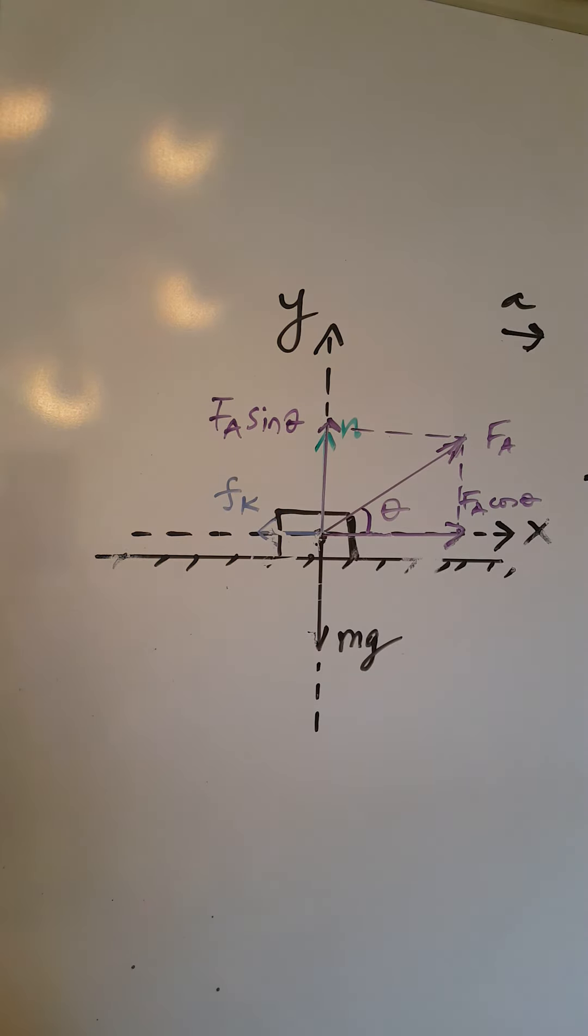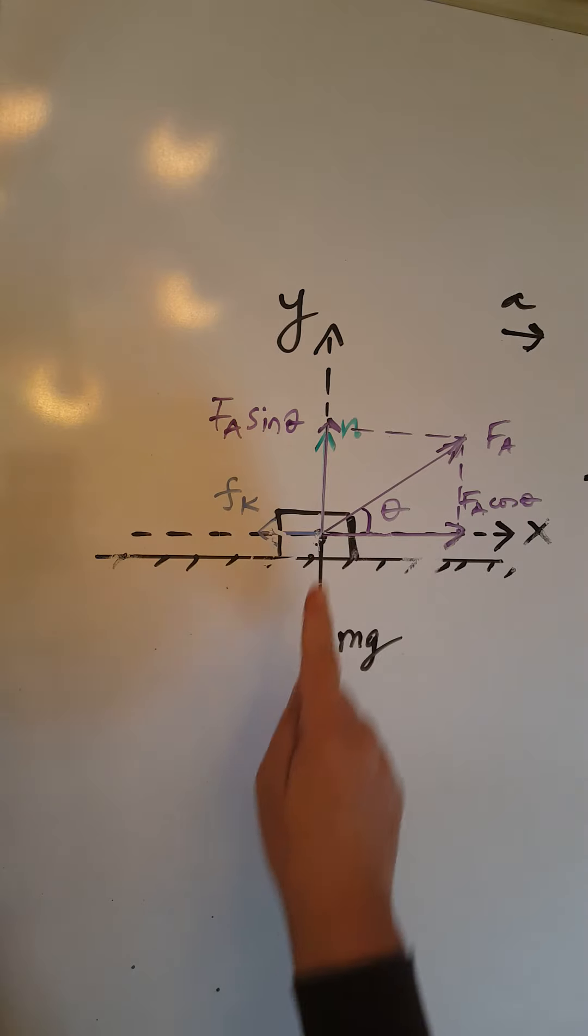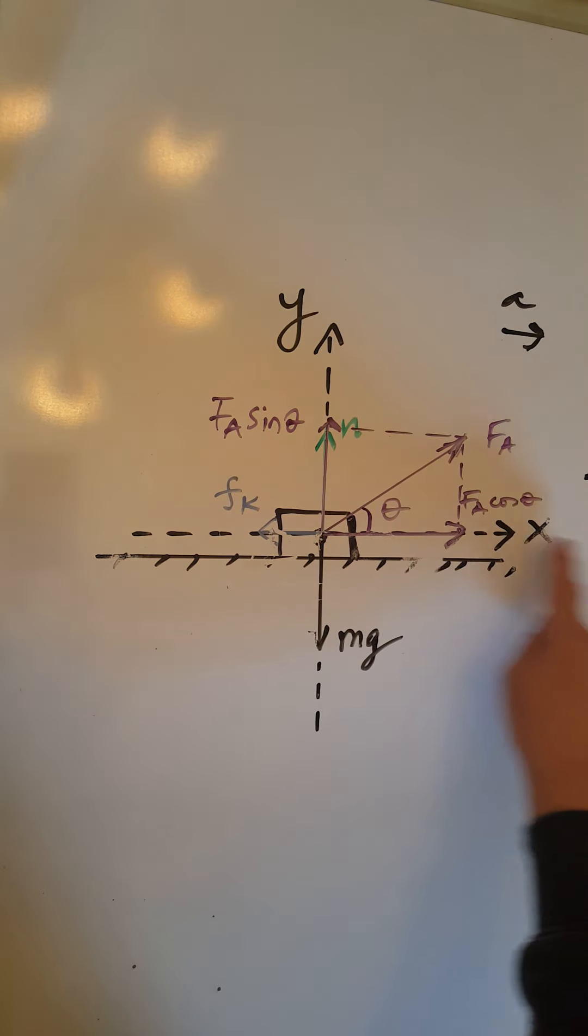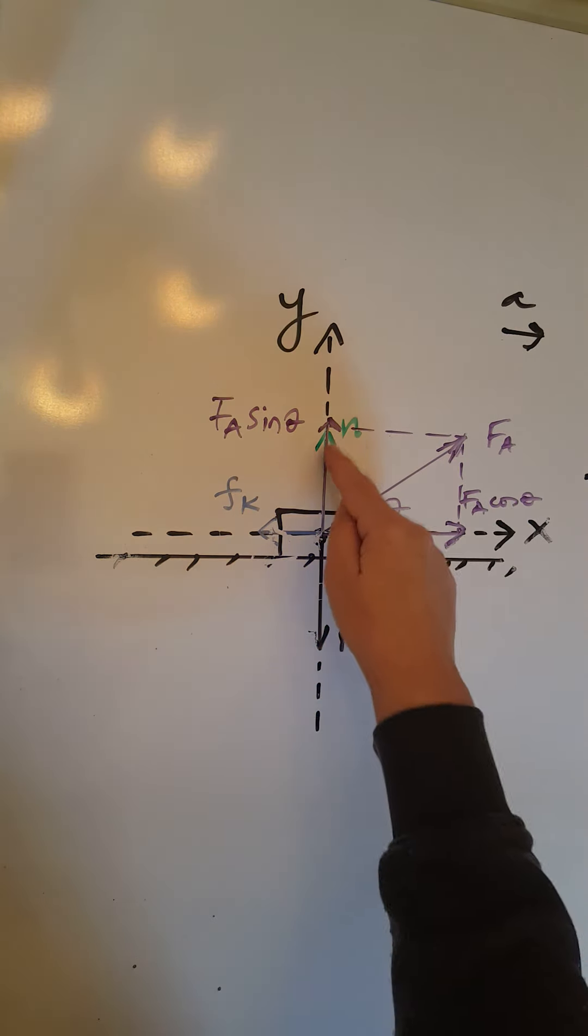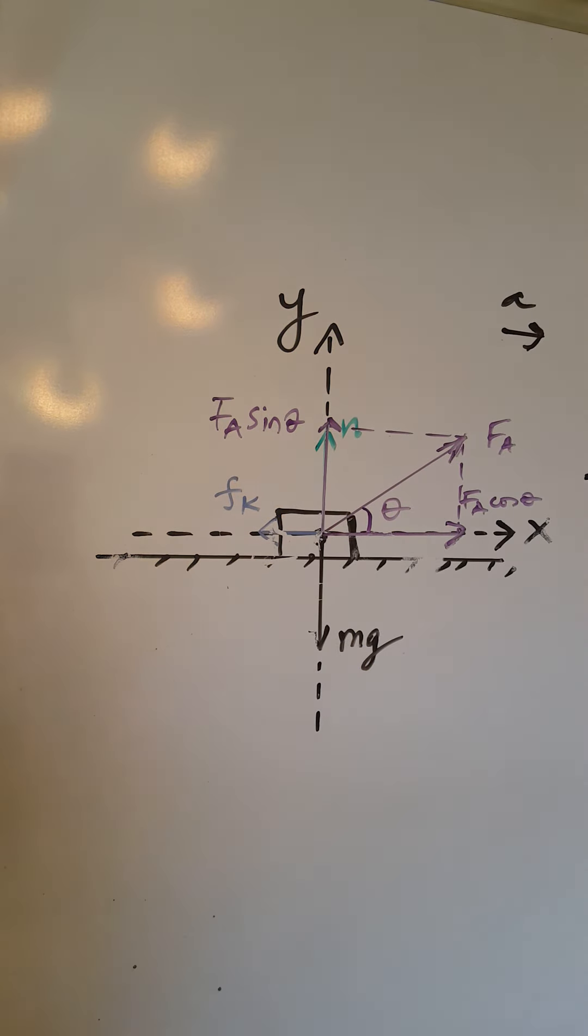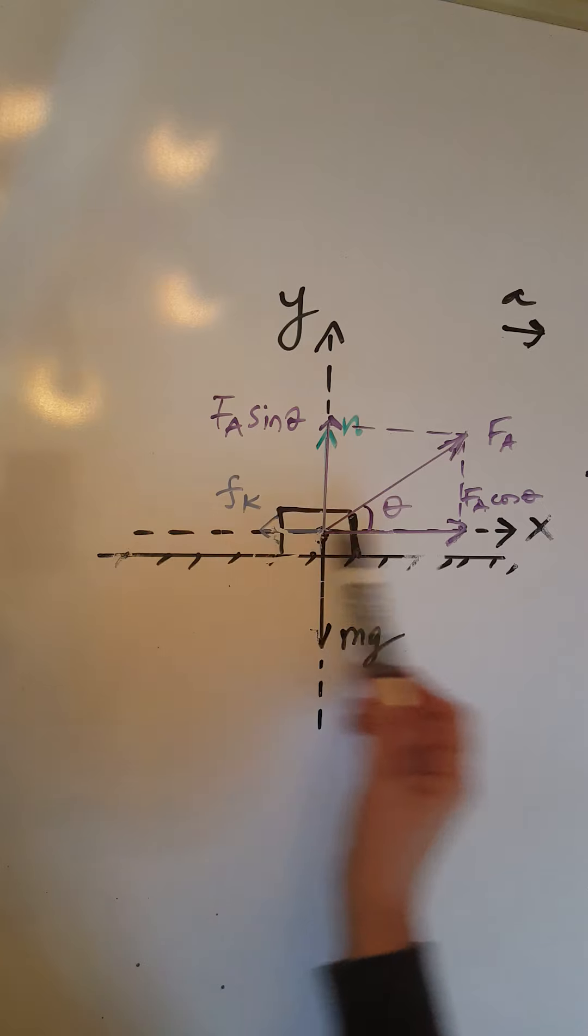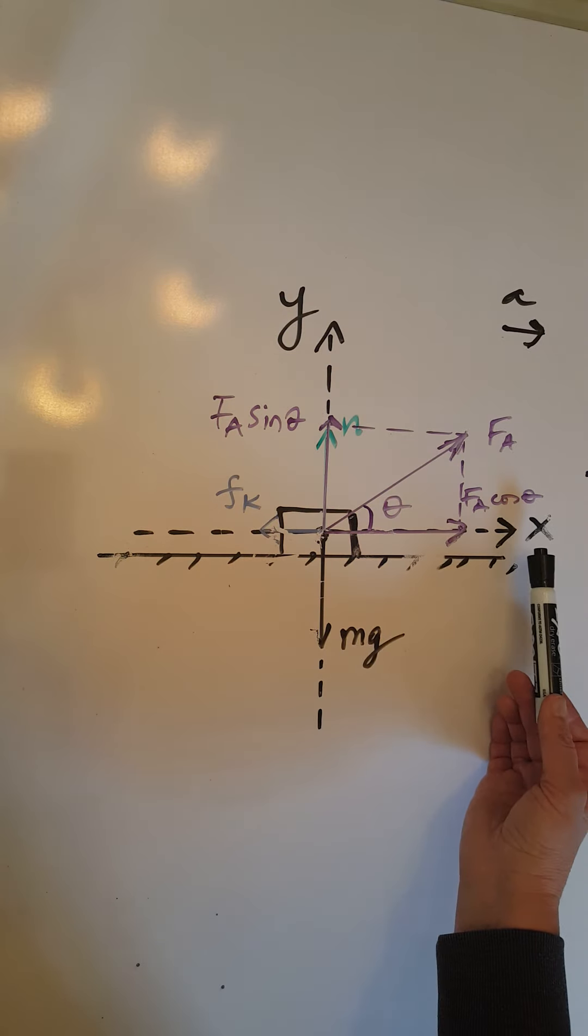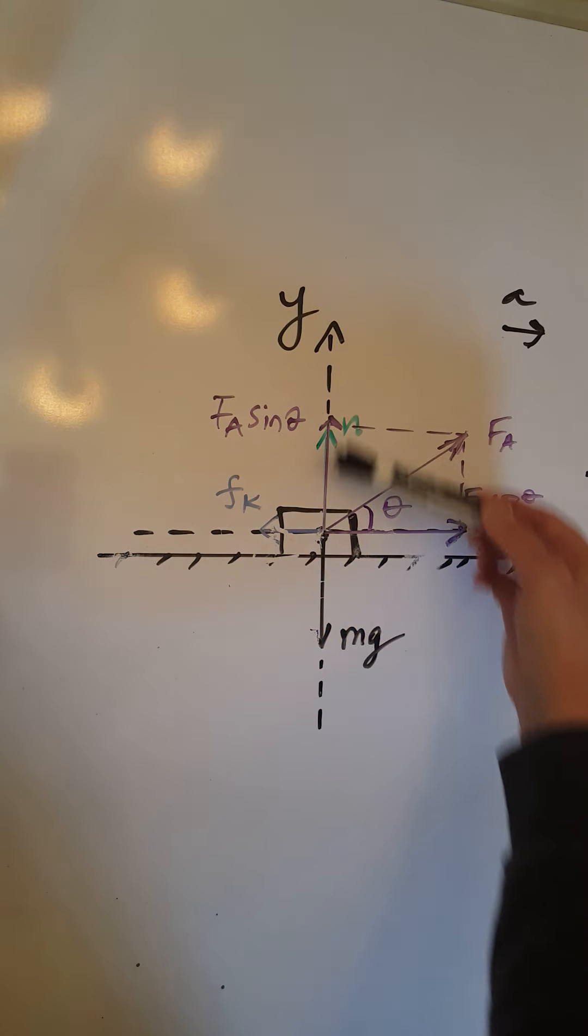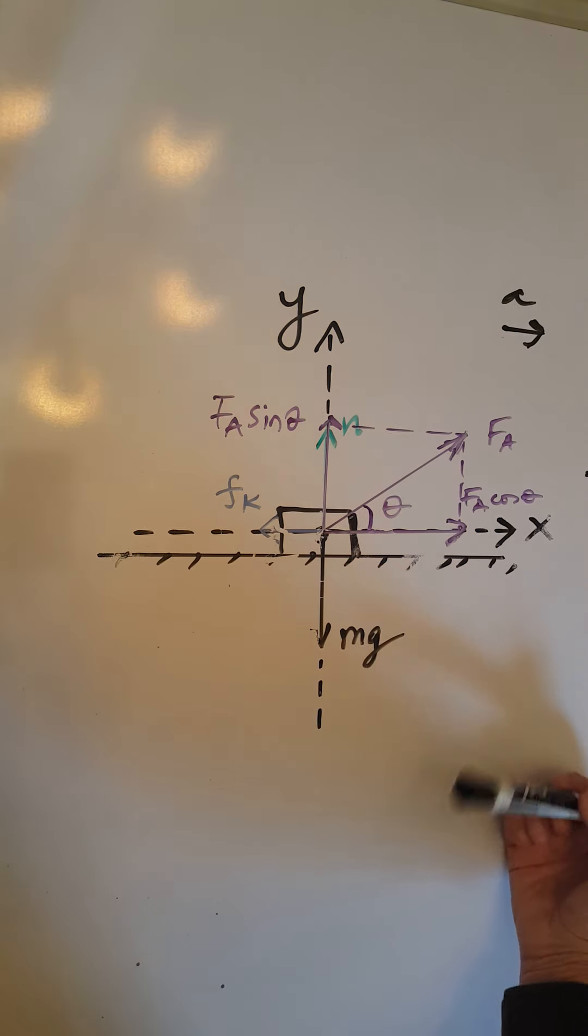Now we have all forces going in the two directions. Two forces on the x, and one, two, three forces on the y. Let's do a magnitude check. So we know this object accelerates on the x axis on the table to the right, so therefore the x forces must be unbalanced in the favor of the one going to the right. On the other hand, the y forces, the three y forces must be balanced.